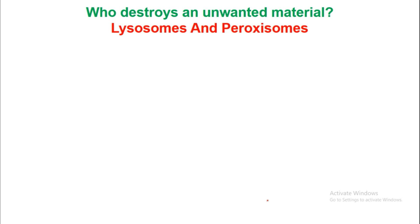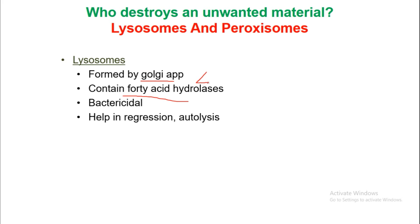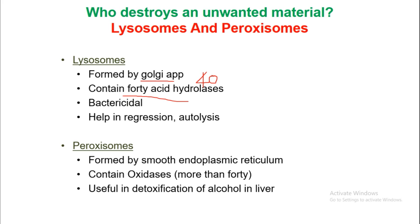What destroys unwanted material? Lysosomes and peroxisomes. Lysosomes are formed by the Golgi apparatus and contain around 40 acid hydrolases. They are bactericidal — meaning they kill bacteria — and help in regression and autolysis. Peroxisomes are formed by the smooth endoplasmic reticulum and contain oxidases, more than 14 in number. They are useful in the detoxification of alcohol in the liver.